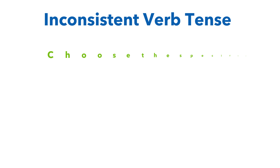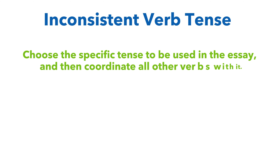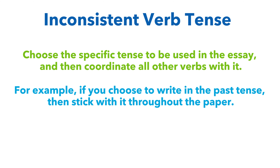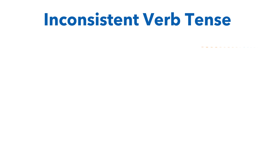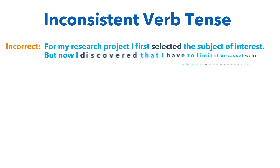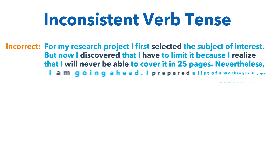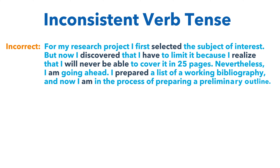Inconsistent verb tense. Choose a specific tense for your essay and coordinate all verbs with it. For example, if you choose to write in the past tense, stick with it throughout the paper. Here is an example of a paragraph with inconsistent verb tense: 'For my research project, I first selected the subject of interest, but now I discovered that I have to limit it because I realized that I will never be able to cover it in 25 pages. Nevertheless, I am going ahead.' In this paragraph, three different tenses are used: past, present, and future.